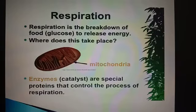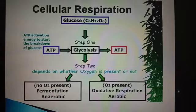The food that is prepared in the form of glucose is then broken down to release energy, and this process is called respiration. It occurs in the mitochondria of cells and is controlled by special enzymes. The respiration occurring at cellular level to release energy is called cellular respiration.